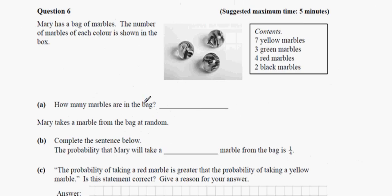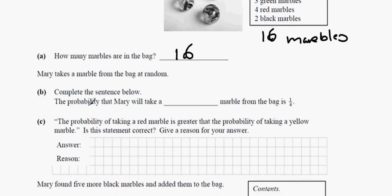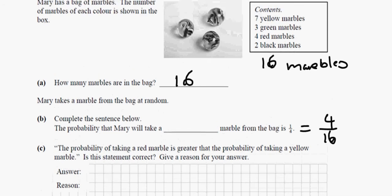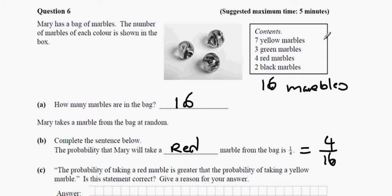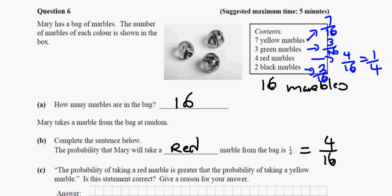Mary has a bag of marbles: 7 yellow, 3 green, 4 red, 2 black — 16 marbles in total. Complete the sentence: the probability of taking a certain colour is one quarter. One quarter equals 4 in 16, which corresponds to the red marbles. Probability of yellow is 7/16. Probability of green is 3/16. Probability of red is 4/16, which simplifies to one quarter. Probability of black is 2/16, which simplifies to one eighth.